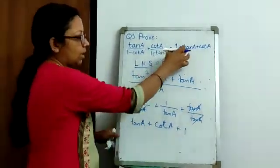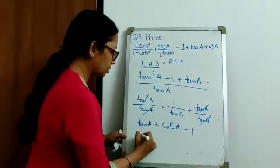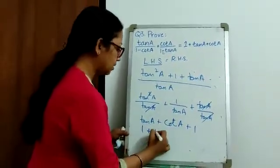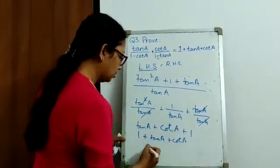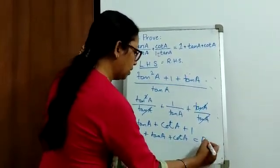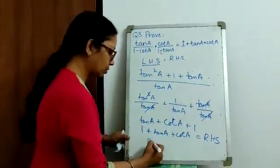So, if we see our RHS, it is similar to my RHS. We will just rearrange it. So, it becomes 1 plus tan A plus cot A. So, this is equal to my RHS. Hence, we have proved our solution.